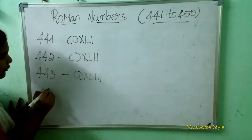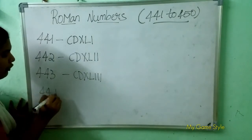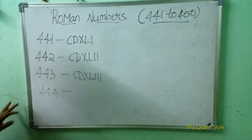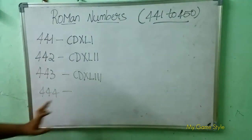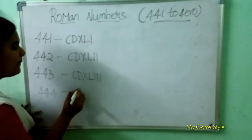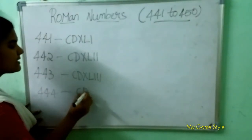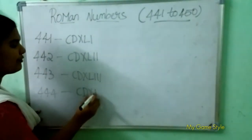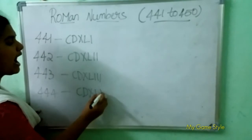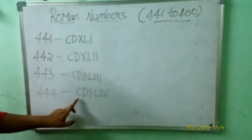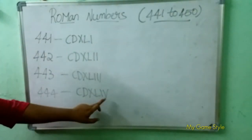444 means 444. So how to write 444 here? CD is 400, XL is 40, IV is 4. So this means 444.